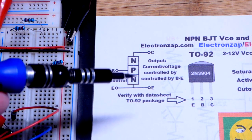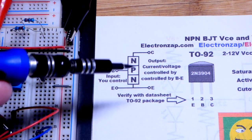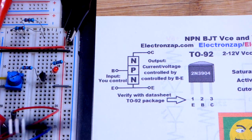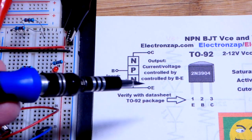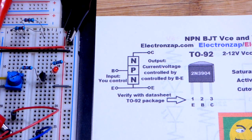That is how we control how well it conducts from collector to emitter. So there will also be a voltage from collector to emitter that we are interested in.